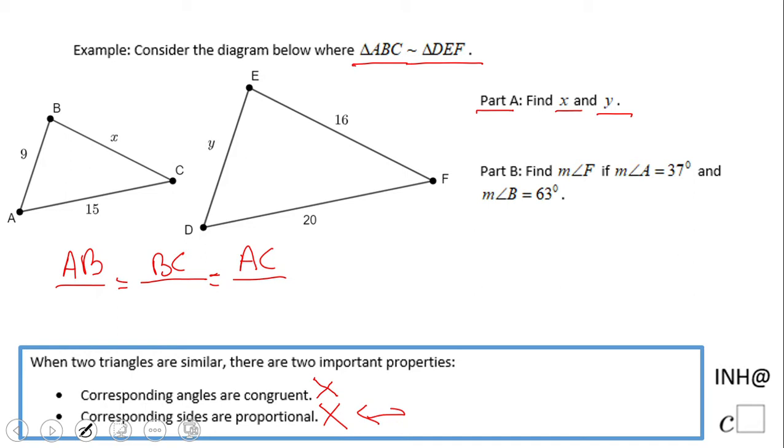Now we're going to replace them with letters and numbers, variables and numbers. So AB is 9, DE is y which we need to find, BC is x, EF is 16.